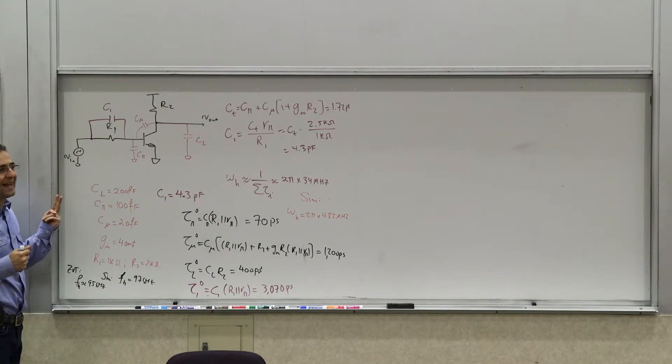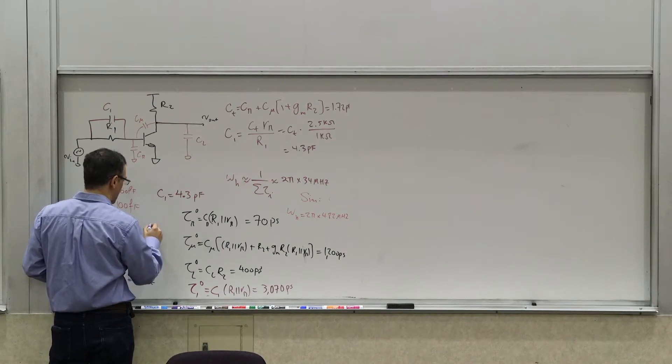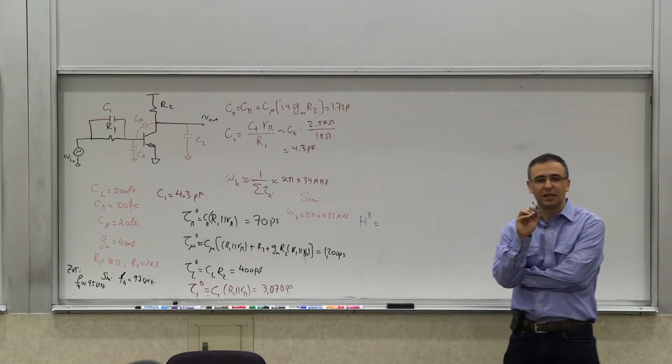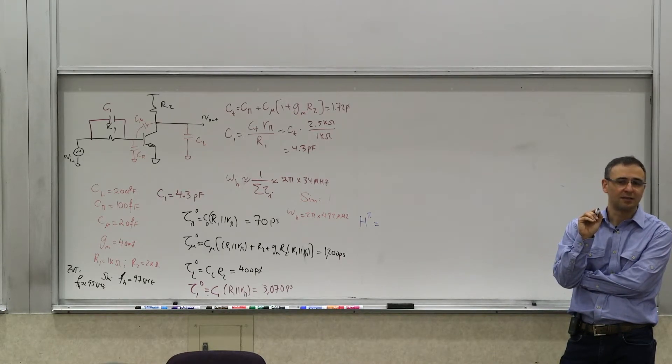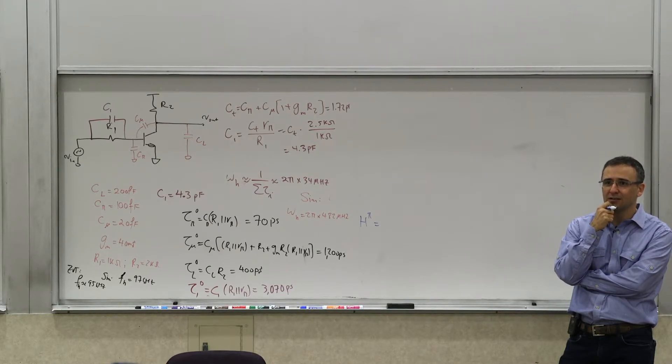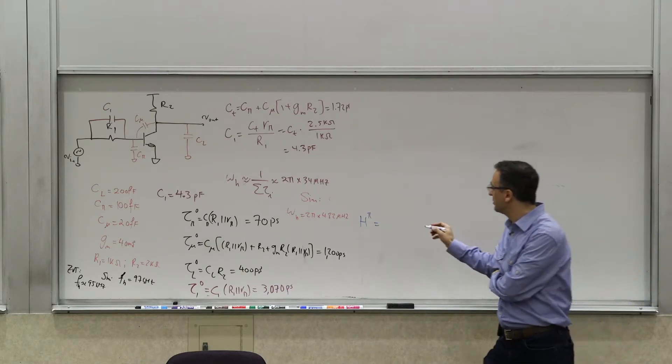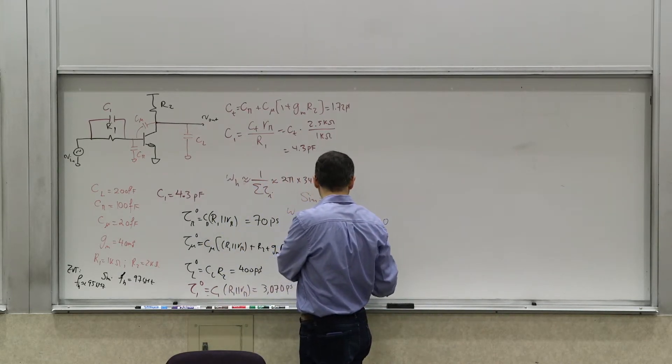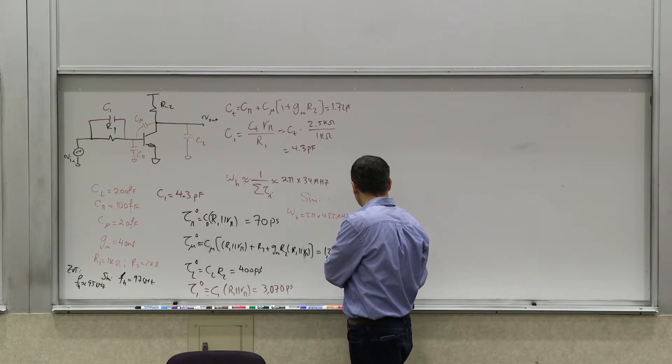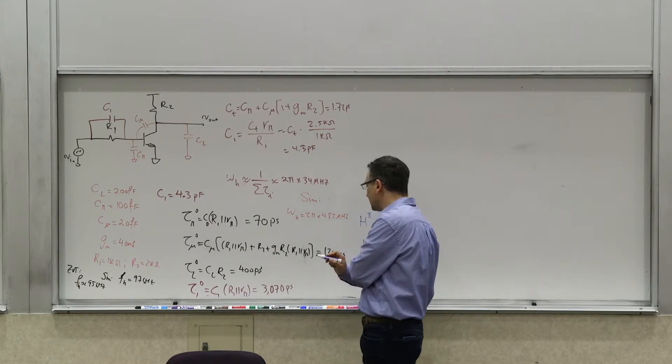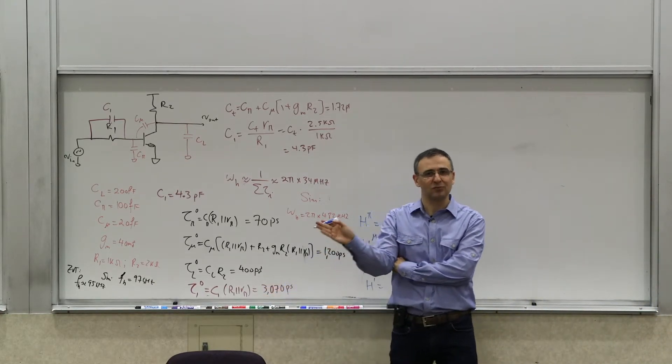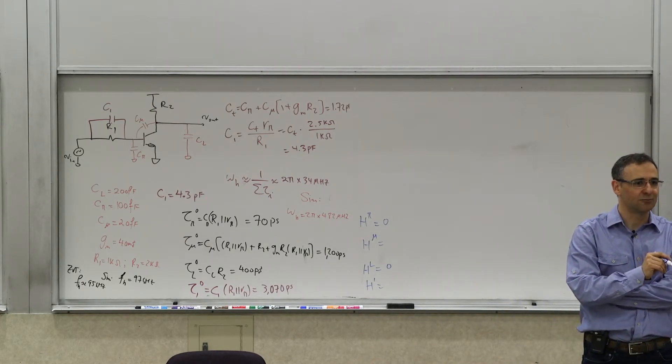So this was the one we had before. These are the four time constants we calculated, the originals. Now we have to see which ones need modification, or correction. There are only two that have non-zero h_i's, right? Not all four of them. So there's h_pi - what is h_pi? That transfer constant, if you short circuit c_pi, you get nothing - it's zero. h_L is also zero. There's h_mu that's non-zero, and h_1 that's non-zero. We suspect most of this nonsense is caused by h_1 anyway.